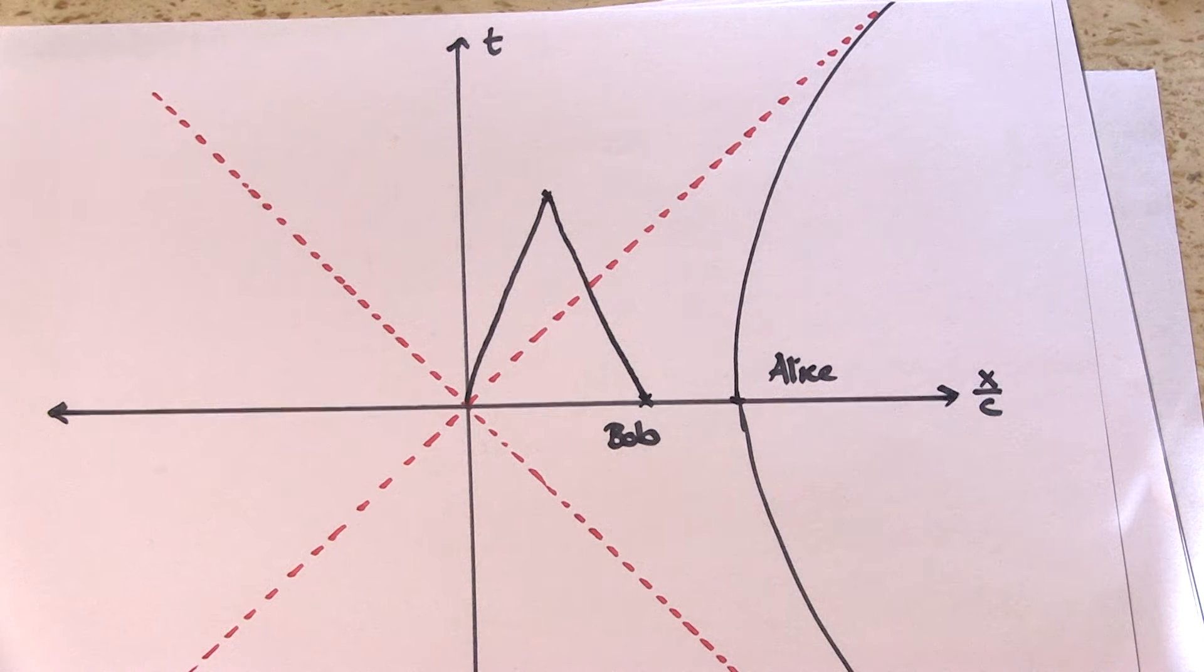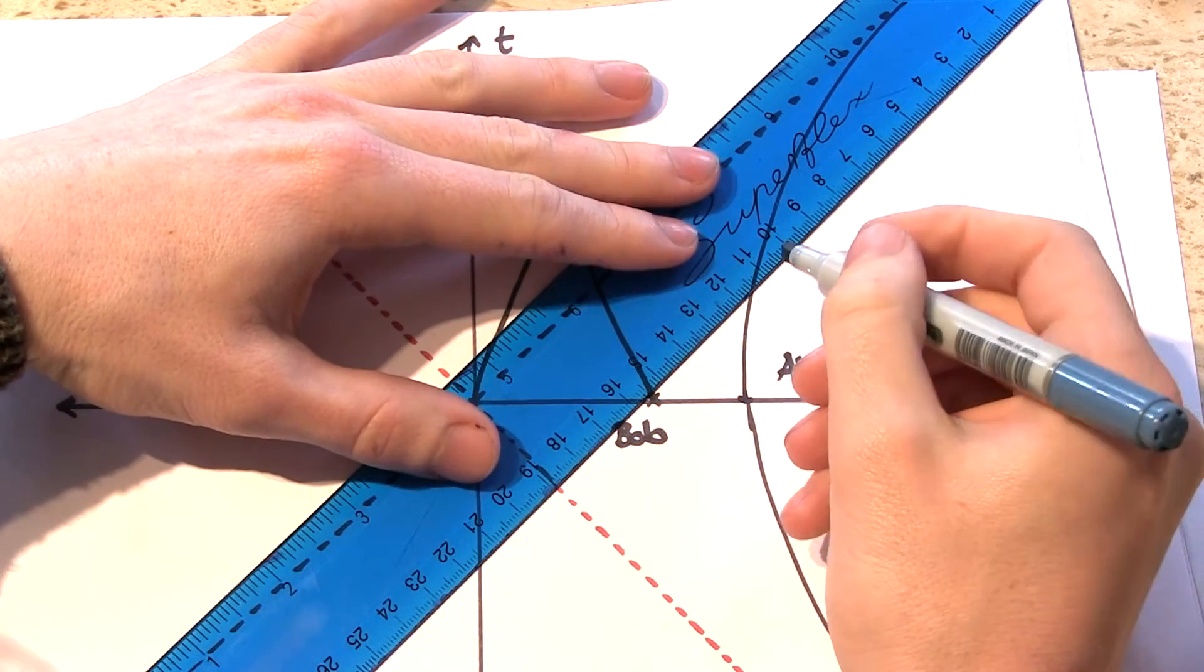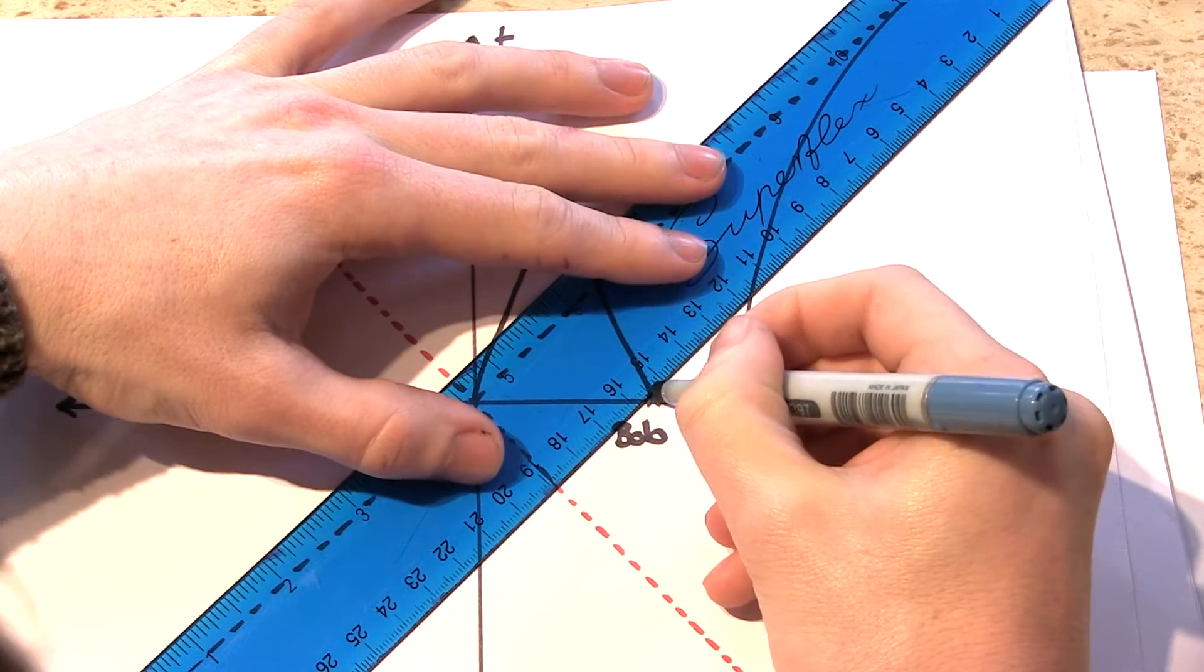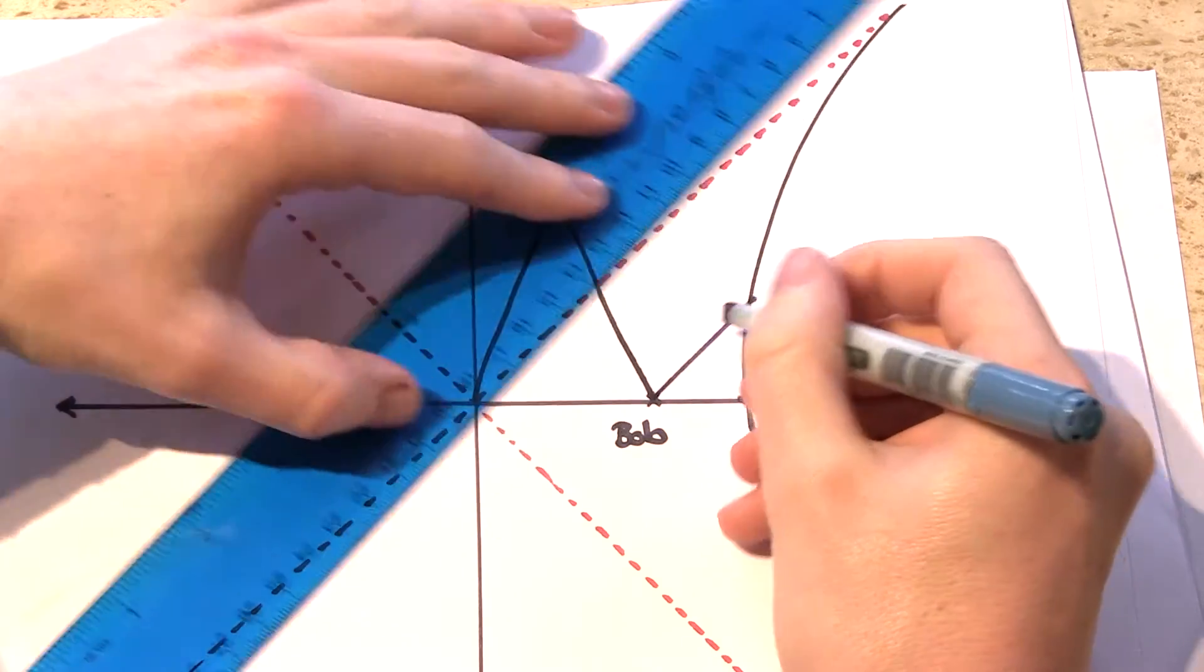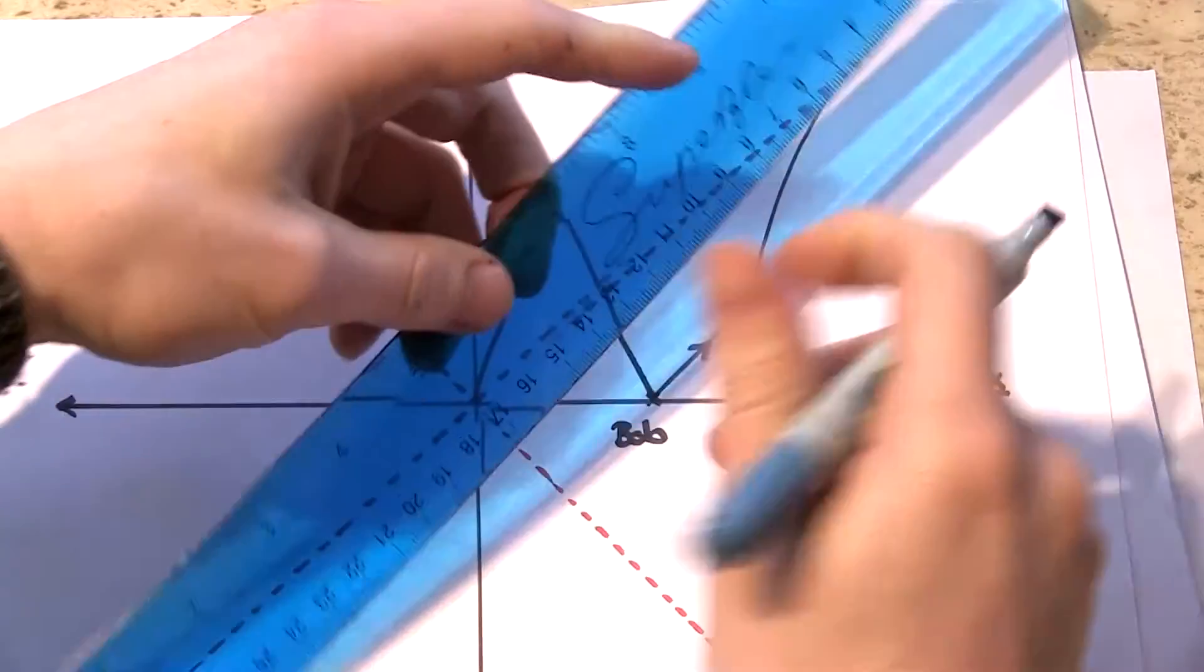And what does Alice see of Bob's betrayal? Well, in order to see Bob in the first place, light has to travel from Bob to Alice's eyes. And we can easily draw the path of those light rays on the space-time diagram. Remember that light travels at 45 degrees. So Alice has already started accelerating away from me when she sees Bob begin to move.